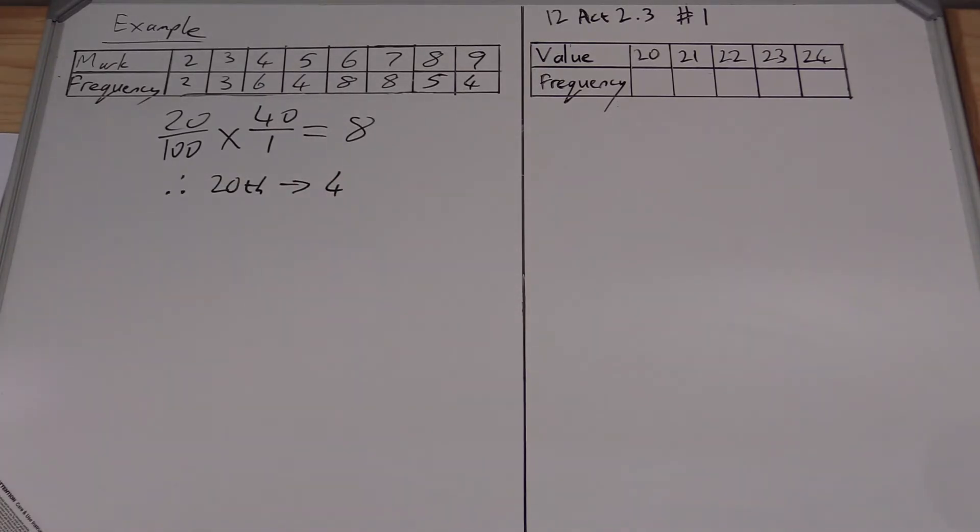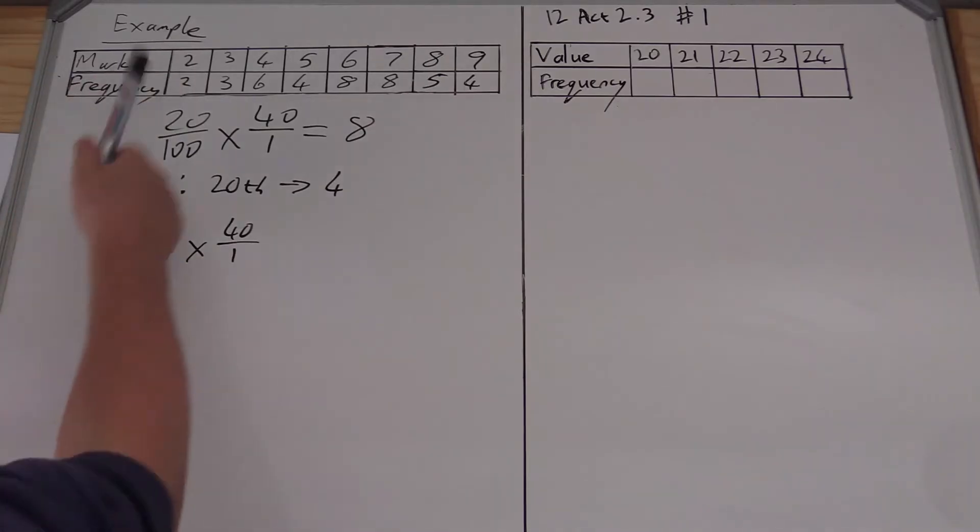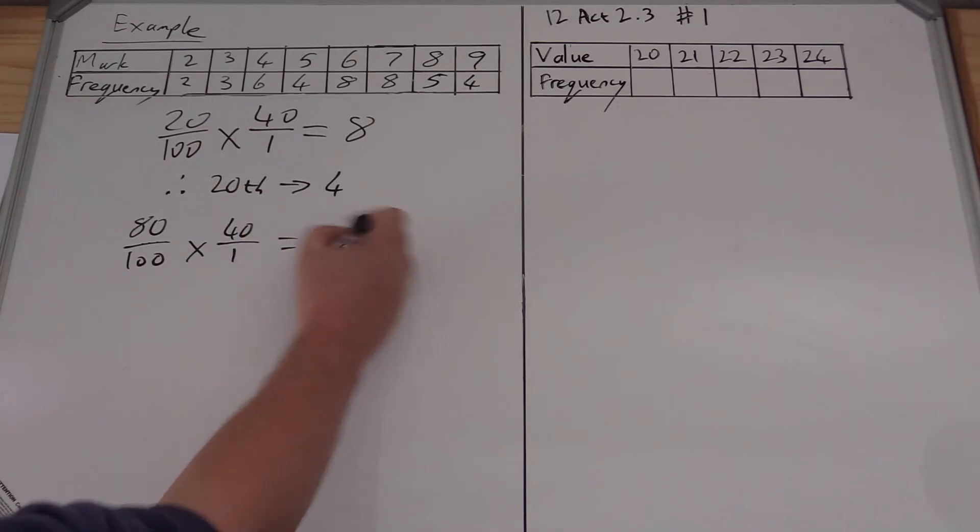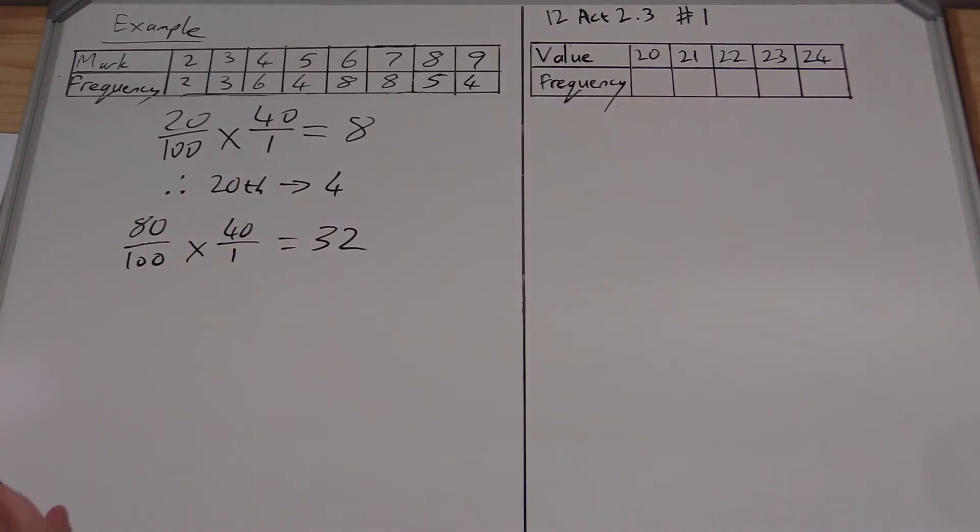In the same way, in the example they asked us to find the 80th percentile. Similar situation, I take 80 over 100 and multiply that by 40 over 1. I'm looking for whichever would work out as the 80th, and I'm going to get 32.